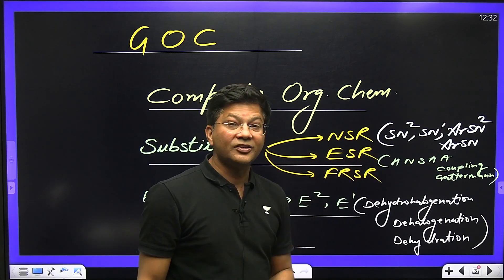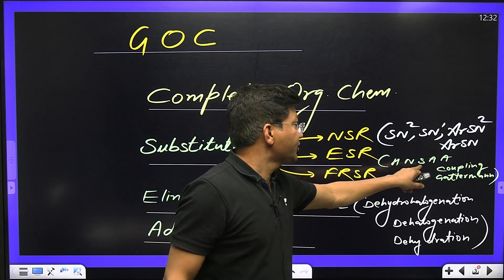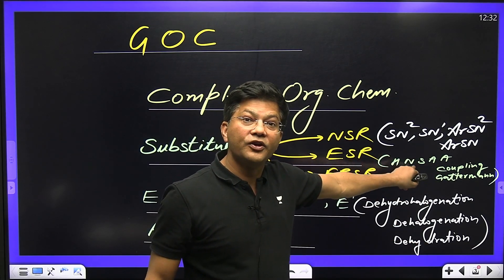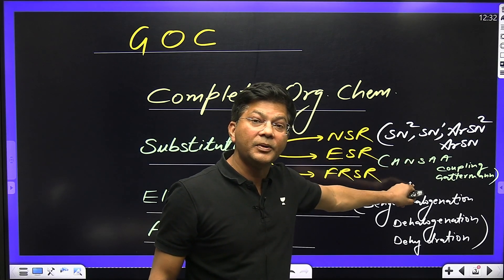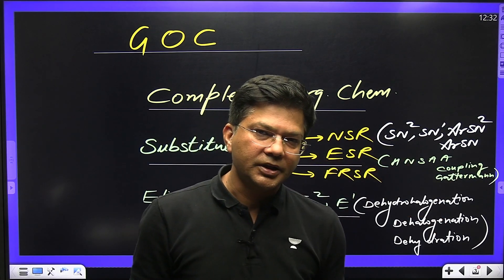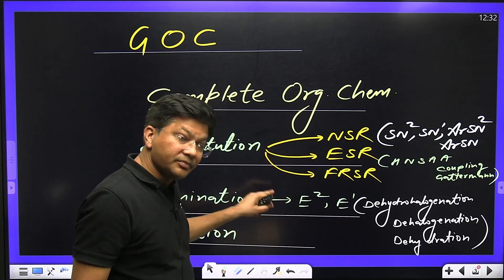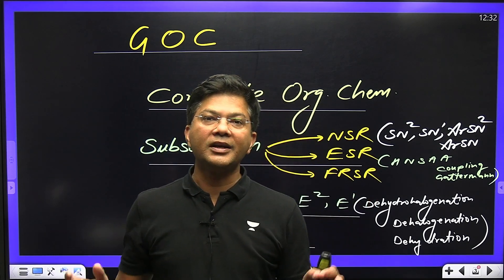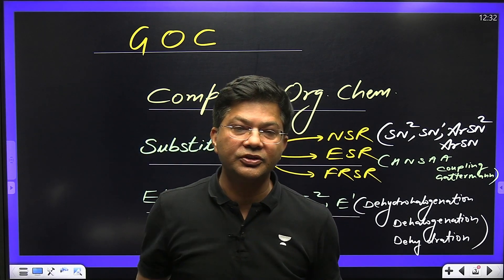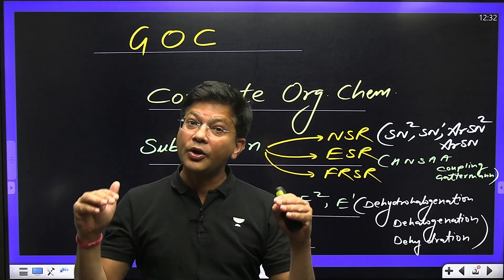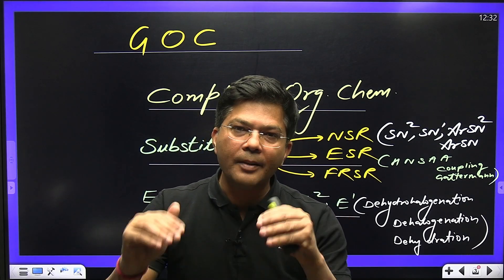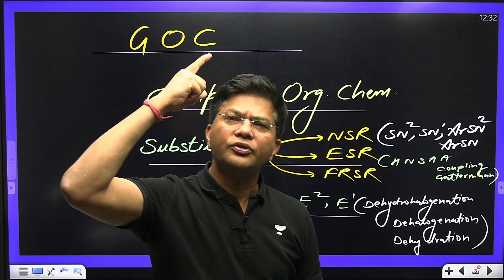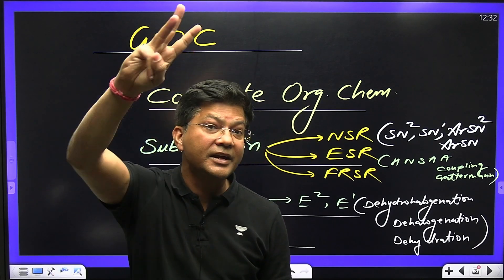Now for electrophilic substitution — Reimer-Tiemann, HNS, azo coupling, Gattermann, halogenation, nitration, sulfonation, Friedel-Crafts alkylation, acylation, coupling reaction, and Gattermann reaction. Then elimination — also given in chapter 1, halogenoalkanes and halogenoarenes — where substitution and elimination go in parallel simultaneously. E2 and E1 divide into three parts: dehydrohalogenation, dehalogenation, and dehydration.